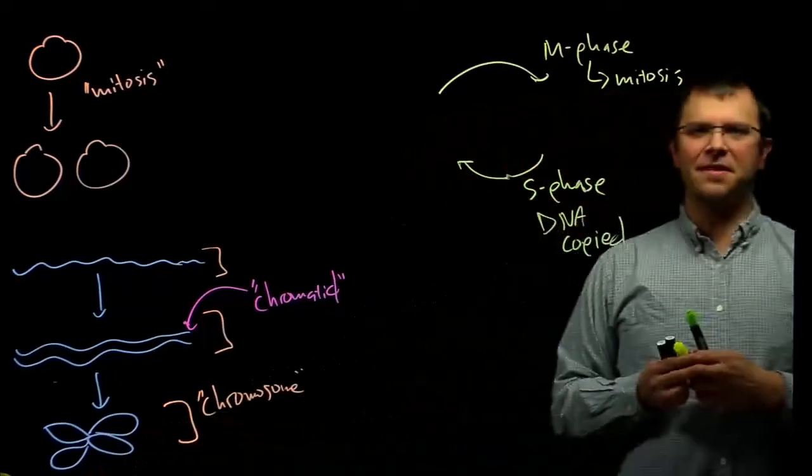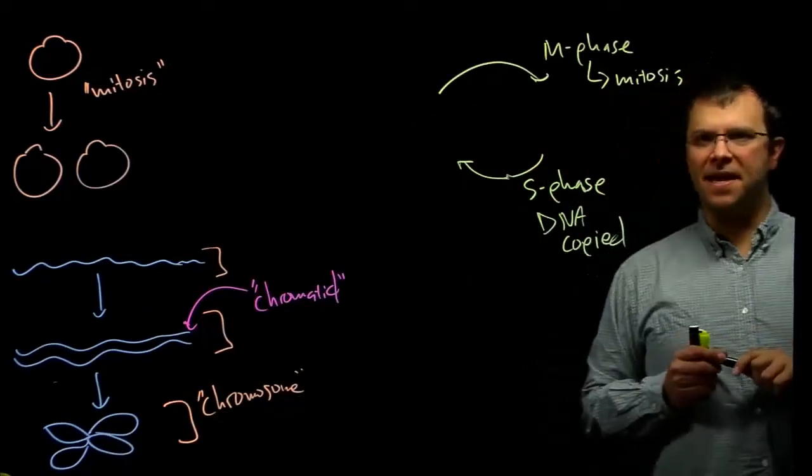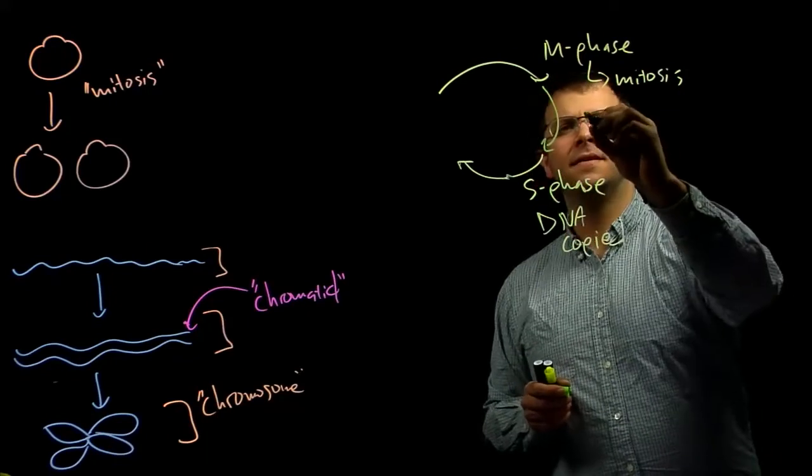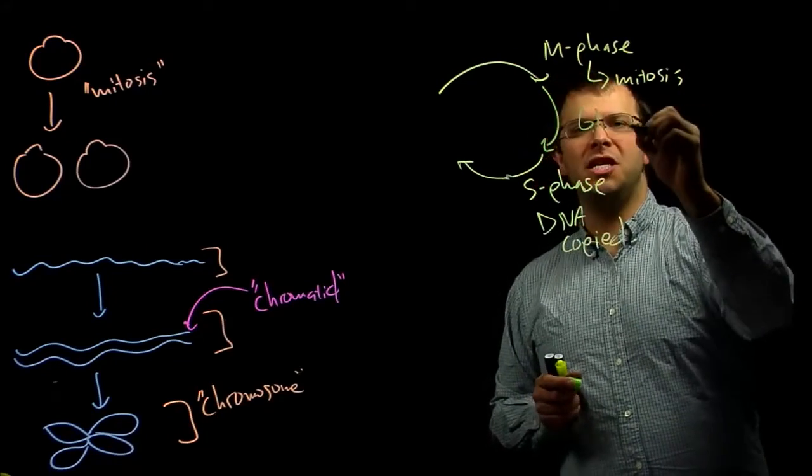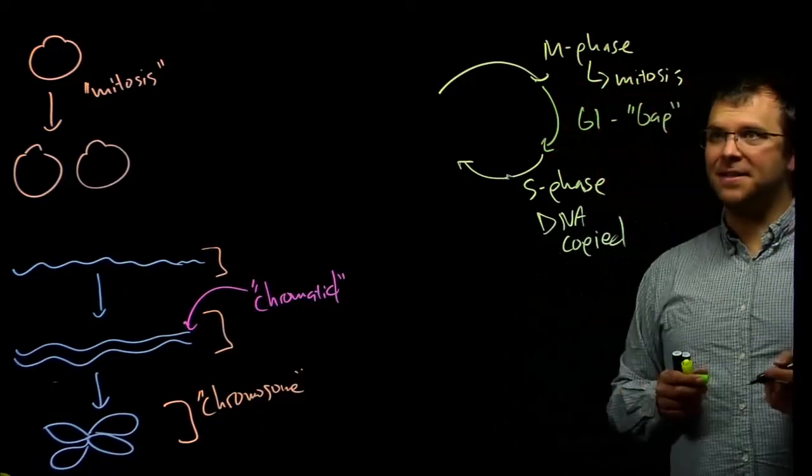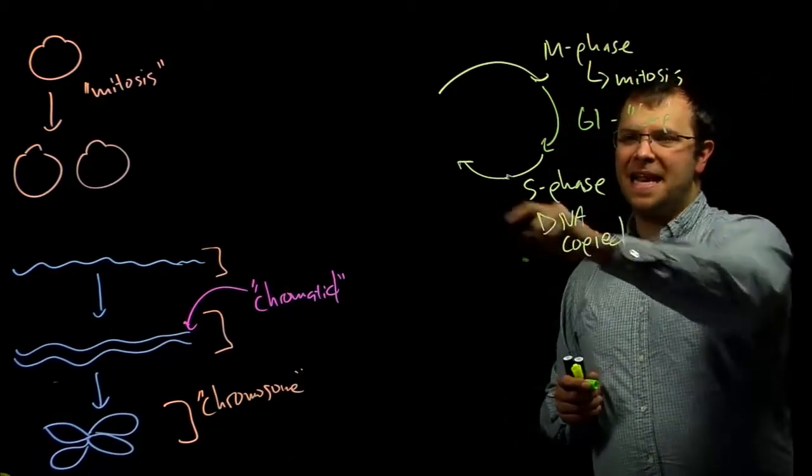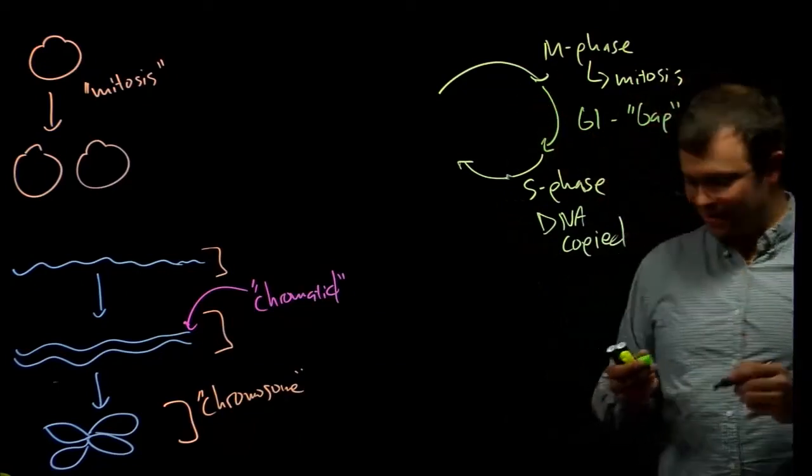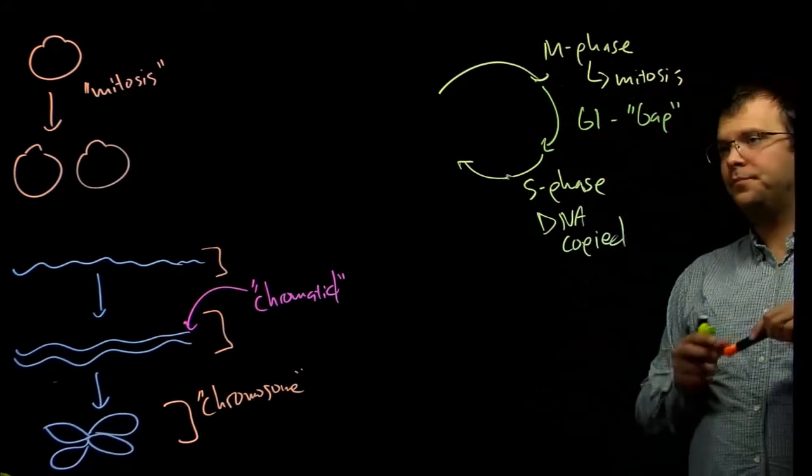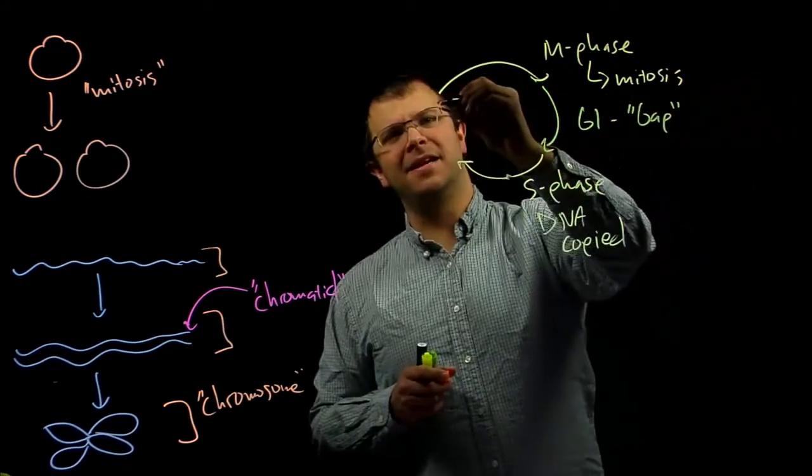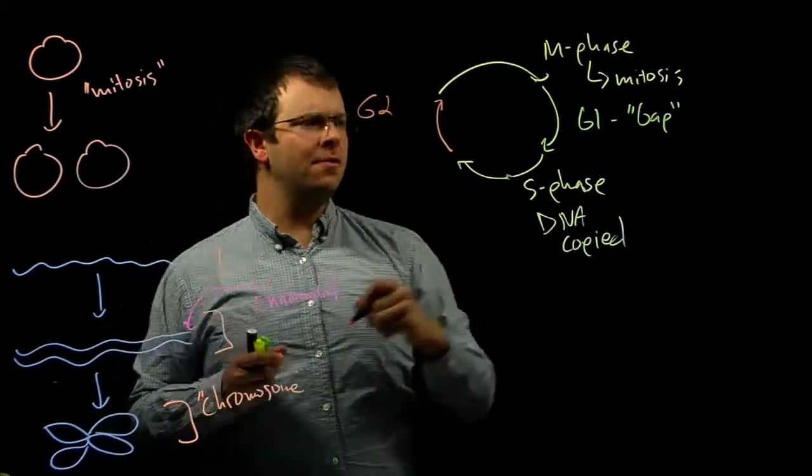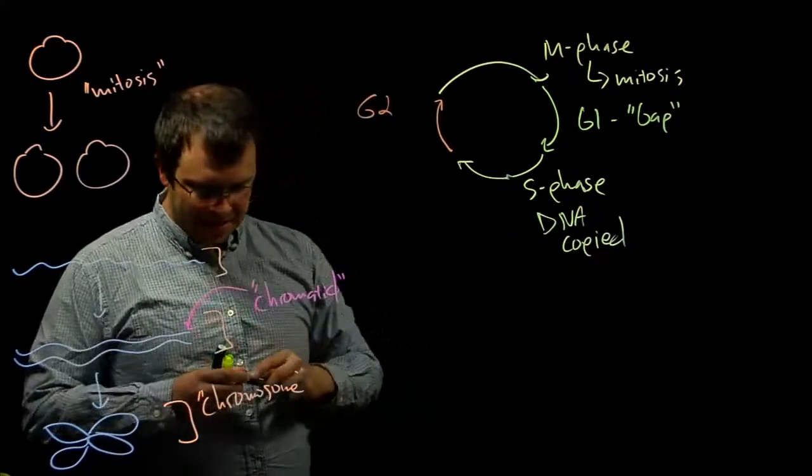And then finally, M phase and S phase are divided by two additional phases. This one is called G1. G stands for gap. Right. It's the time in the cell cycle when the DNA is not copying, but the cell is not dividing. And there's a final phase over here called G2, which is another gap phase.